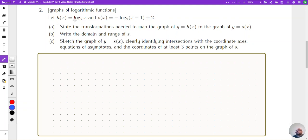So let's say that we have h of x as log base 2 of x and s of x as negative log base 2 of x minus 1 plus 2. State the transformations needed to map the graph of y equals h of x to the graph of y equals s of x.